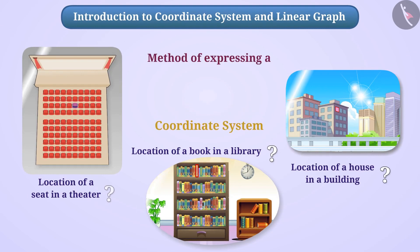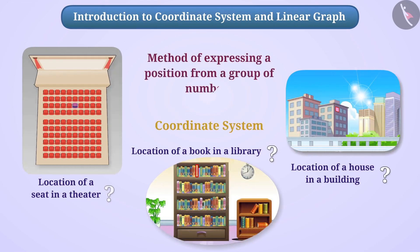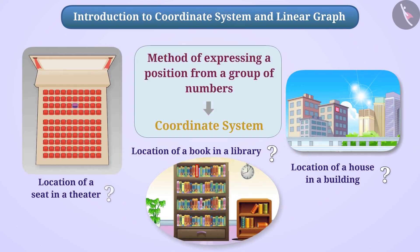The method of expressing a position from a group of numbers is called the coordinate system. With the help of this method, we can determine the position of a point in a plane.